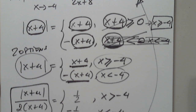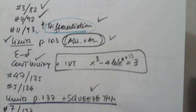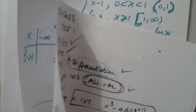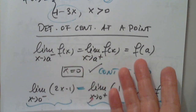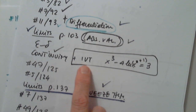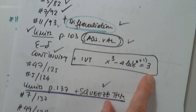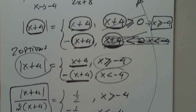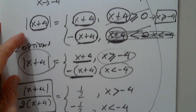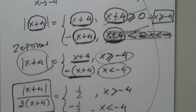Any questions on this one? The continuity at a point — we already discussed that, and reading from graphs, so that's done. I would like us to look at a problem with the Intermediate Value Theorem — I created one. Any questions on this problem?